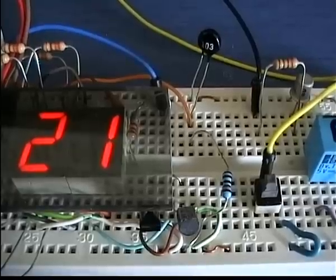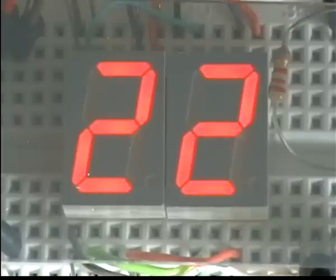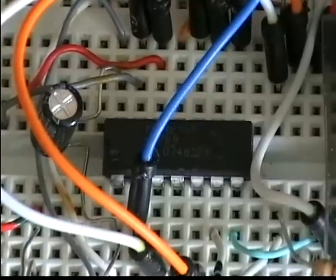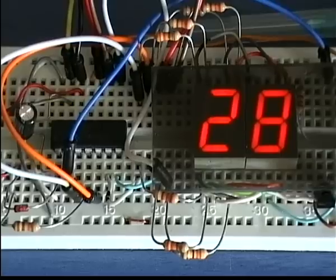As temperature changes, the voltage from the voltage divider changes as well, and this change is measured by the PIC built-in analog to digital converter. With a little math, the binary reading is converted into degrees Celsius.